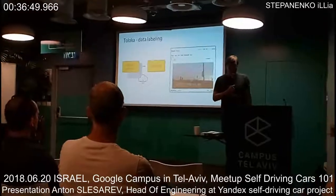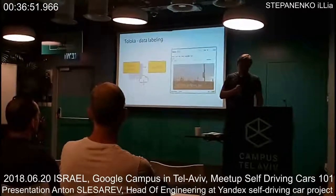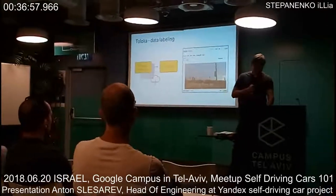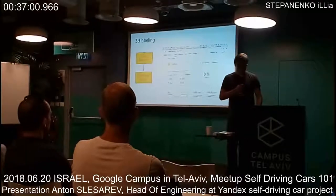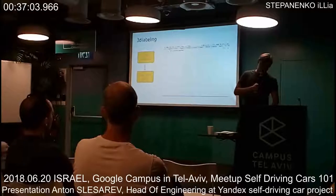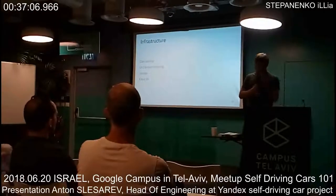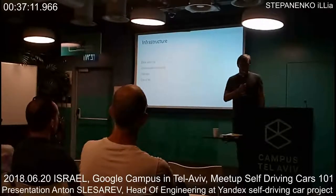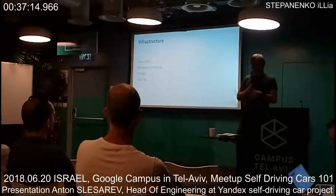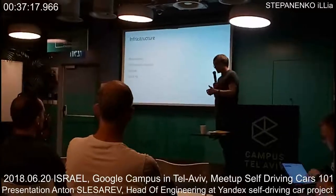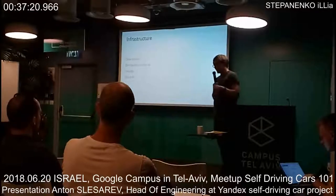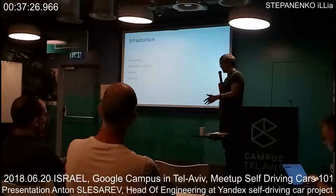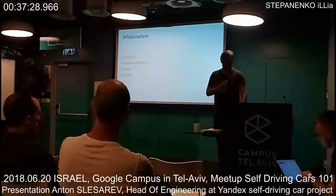As I mentioned, we use Toloka, our crowdsourcing toolset, for labeling — for example, labeling cars for object detection and for 3D object detection. It's a really great tool. So to summarize: we have distributed computing, storages, cloud machine learning, data labeling tools, and many more. Without all that infrastructure, it's much harder to move forward and iterate fast, especially for such a challenging task as self-driving.